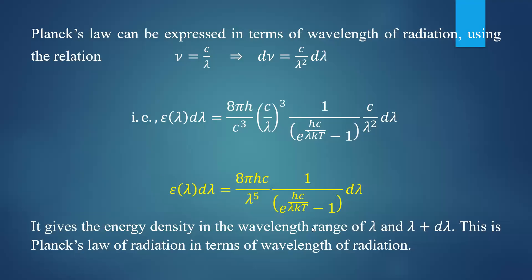This is the energy density as per Planck's law of radiation: ε_λ dλ = (8πhc / λ⁵) × (1 / (e^(hc/λkT) − 1)) dλ.